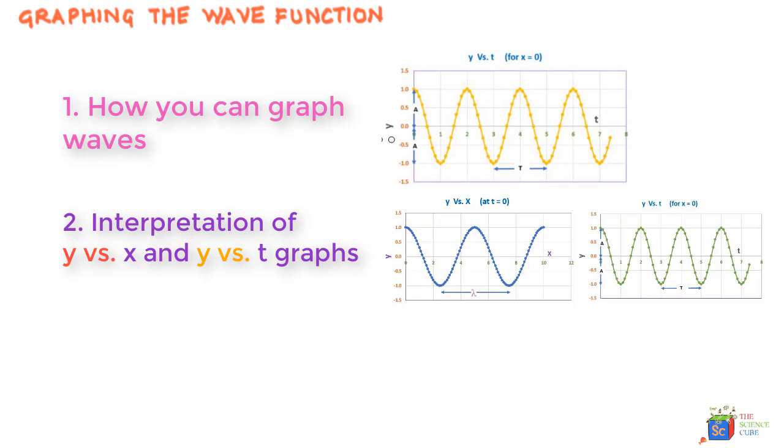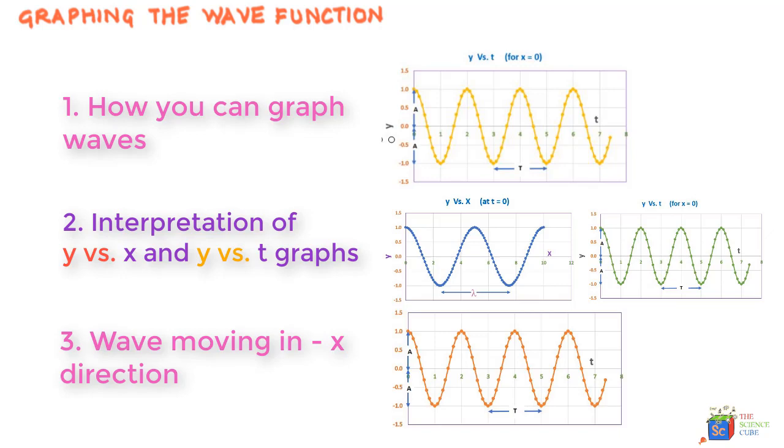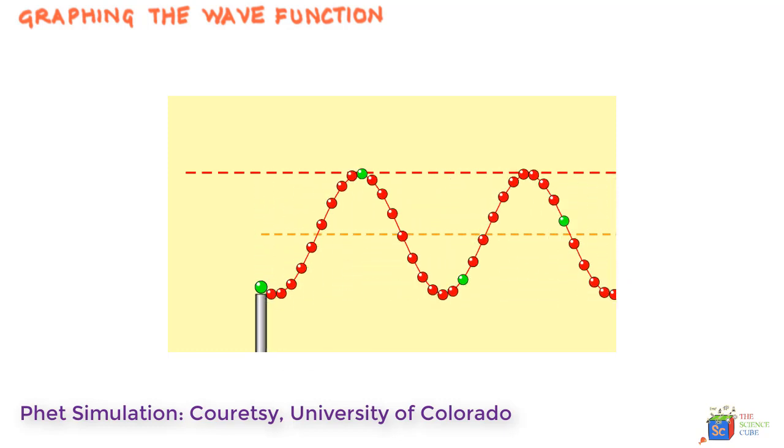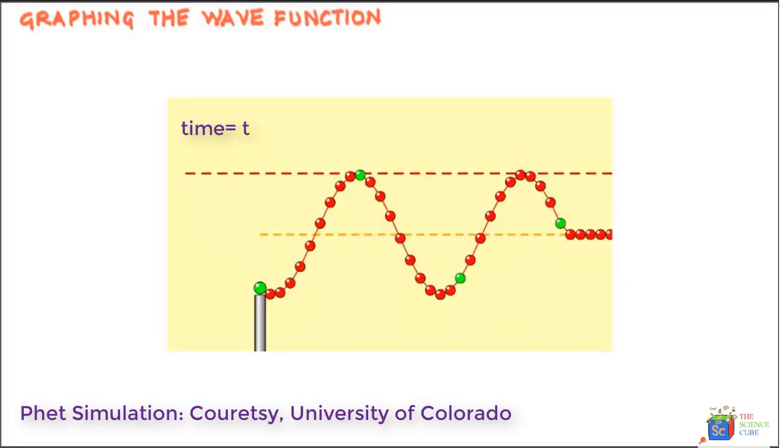So see this rope undergoing wave motion. Let's go ahead and freeze it at some time t. So what we get is a snapshot of the shape of the string at that instant. And mathematically speaking, what we are seeing is the y position of various particles of the string at that time t.